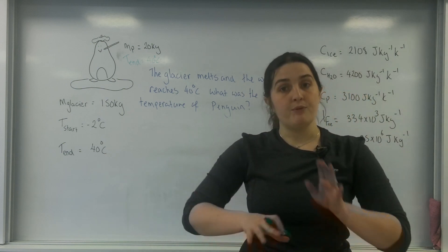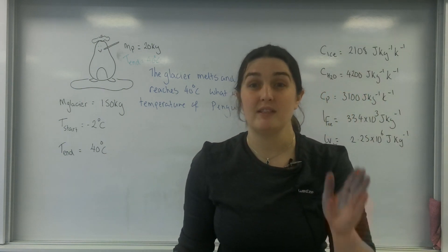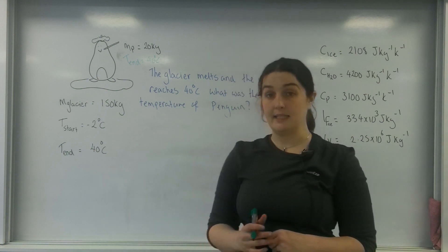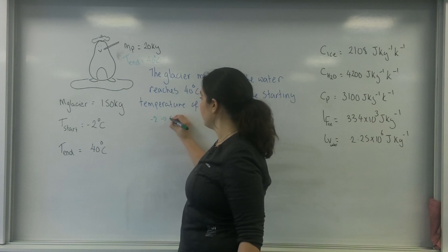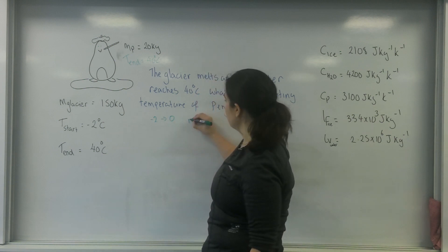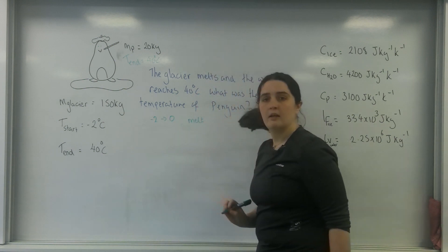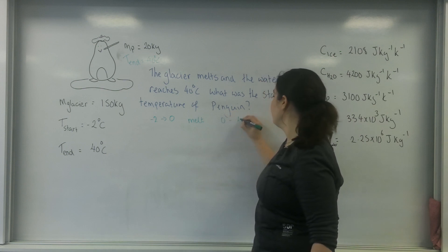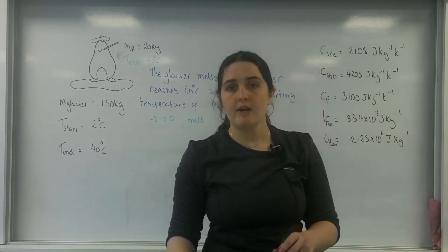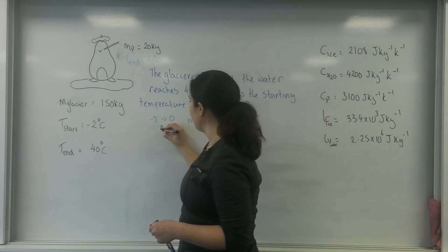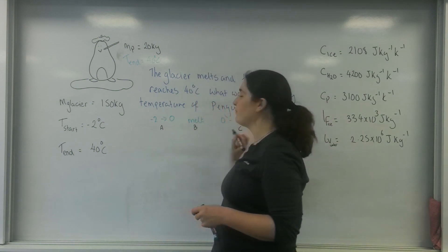What I then do is, before I even do any calculations, I just write the stages of what's happening to my glacier. So my glacier is going to go from minus 2 to 0, then it's going to melt, and then it's going to go from 0 to 40. There are three very distinct stages and I'm going to call them A, B and C.